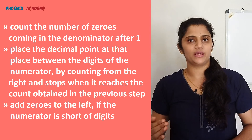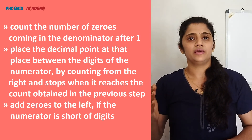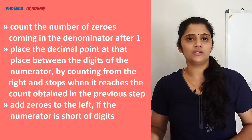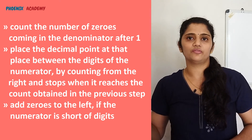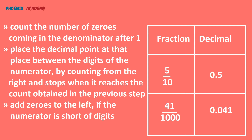Conversion of fractions into decimals: to convert a fraction into a decimal, count the number of zeros in the denominator after 1. Then place the decimal point at that position between the digits of the numerator. We can add zeros to the left if the numerator is short of digits. For example, 5/10 — the number of zeros in the denominator after 1 is 1, so the number of decimal places is 1, and the decimal becomes 0.5.